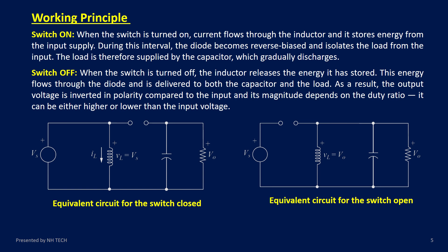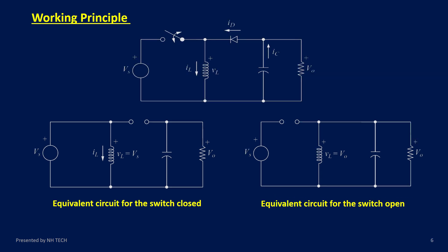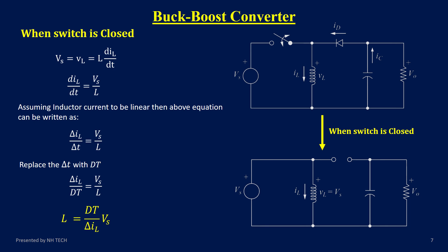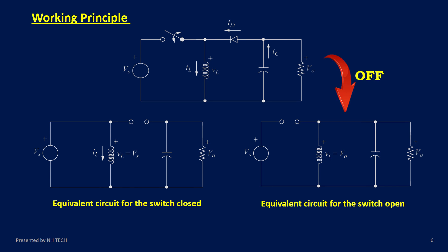The operation of the buck-boost converter can be explained in two modes depending on whether the switch is turned on or turned off. When the switch is turned on, current flows through the inductor and the inductor stores energy in its magnetic field. During this time, the diode is reverse biased and does not conduct. The load current is supplied entirely by the capacitor.